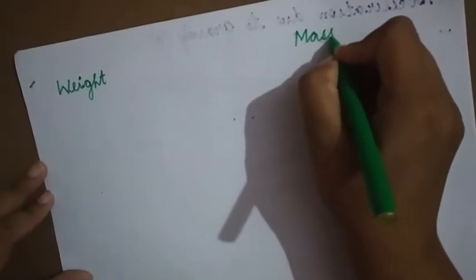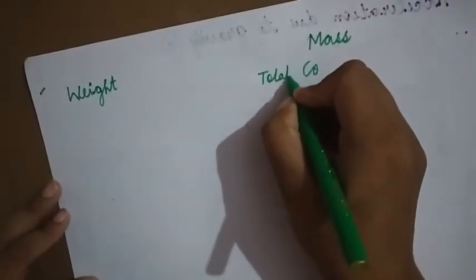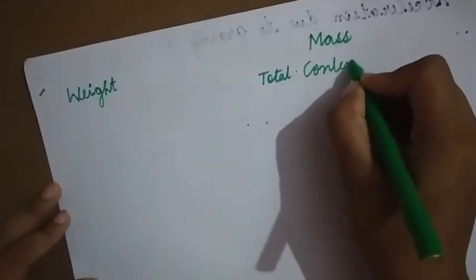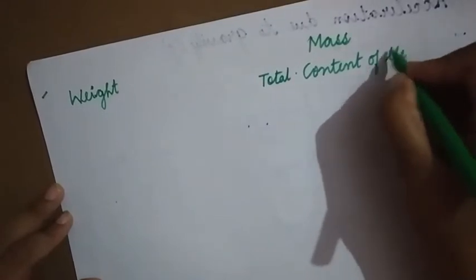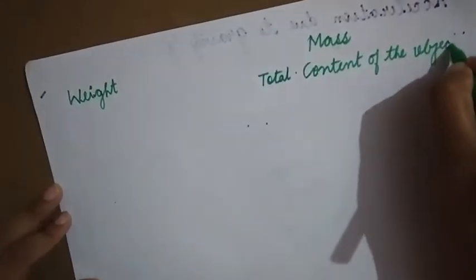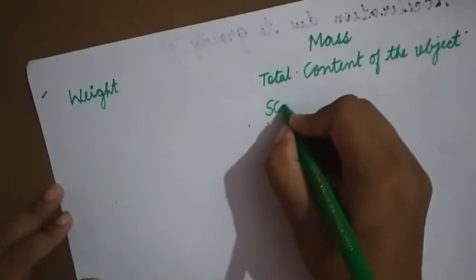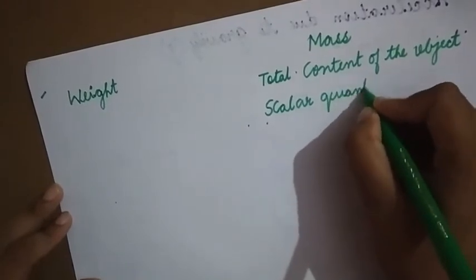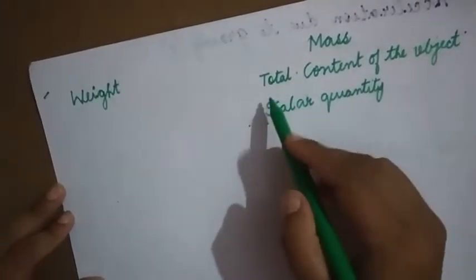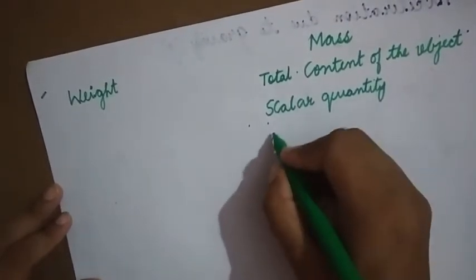Students, next we will try to understand the difference between weight and mass. Now what is mass? Mass is a total content of the object. Mass is a scalar quantity. The SI unit is kg.